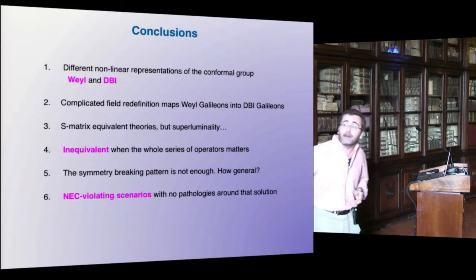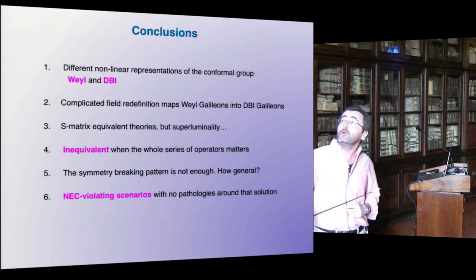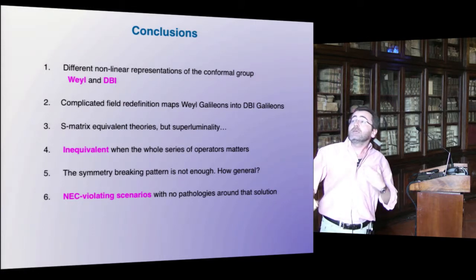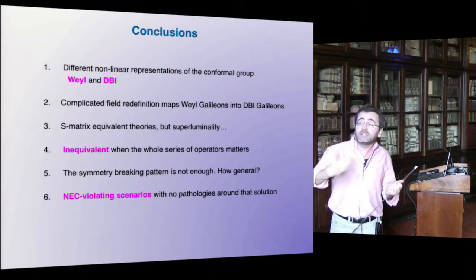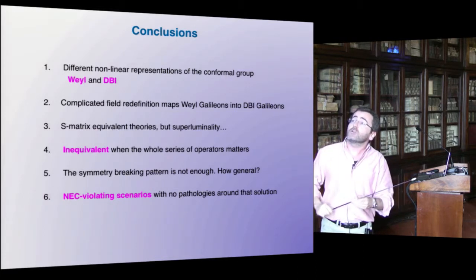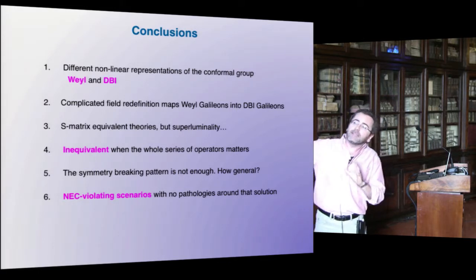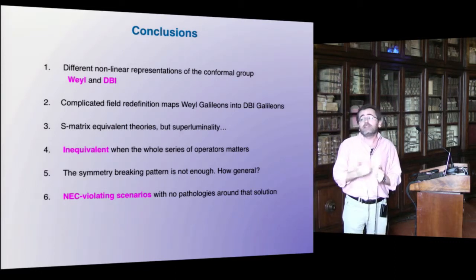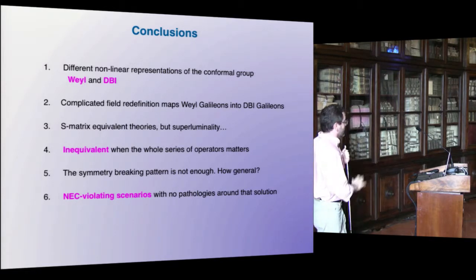Let me recap. There are two representations of the conformal group which give rise to two different sets of Galileans. There is a complicated field redefinition between the two which preserves at least the perturbative S-matrix, but the fact that we are talking about a non-local field redefinition matters in some cases — in particular when studying superluminality. The bottom line is that this also tells you something about the NEC-violating scenarios described at the beginning: we can build solutions which are subluminal, so at least superluminality is not a problem.